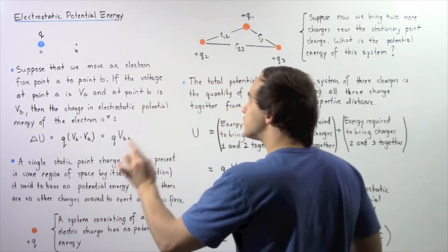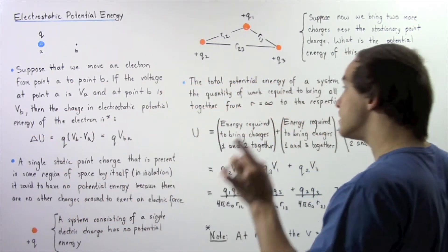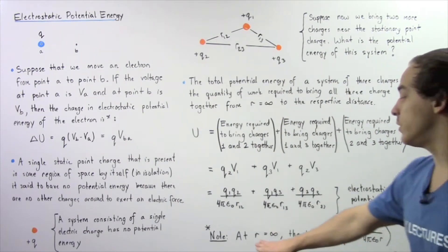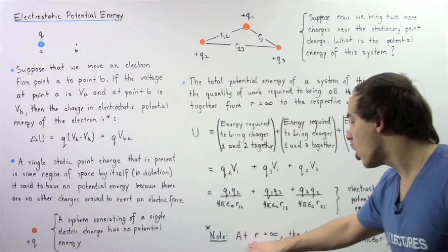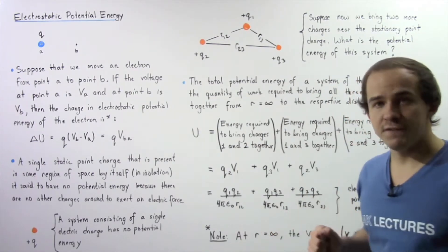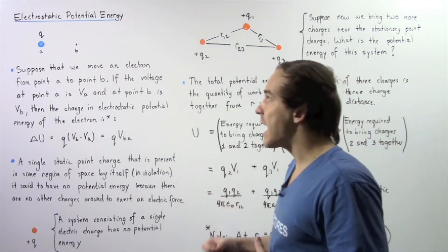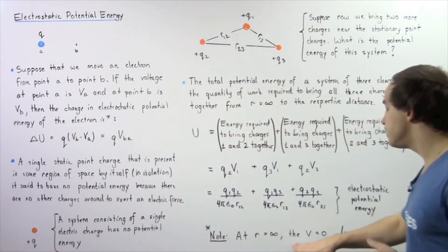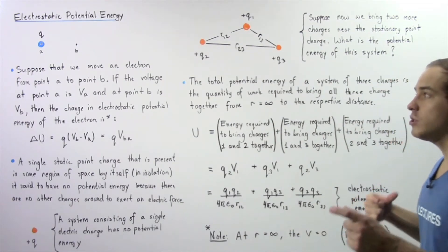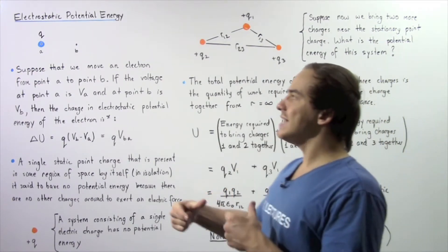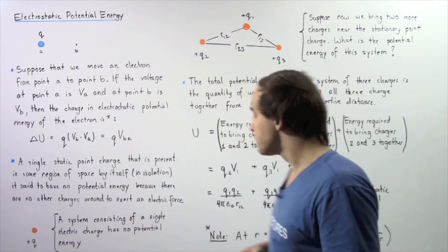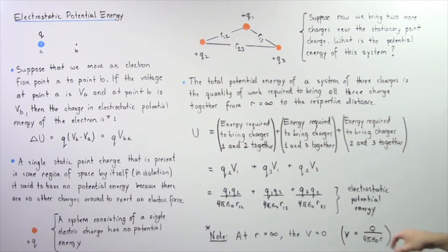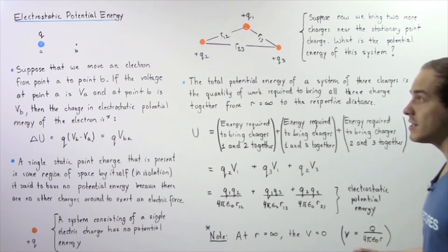When we define the electrostatic potential energy, it's important to note the following point. At R equals infinity — when the distance between our electric charges is infinitely far — the voltage between those two electric charges is defined to be zero. So the voltage is equal to Q divided by 4π epsilon-naught multiplied by R, where R is the distance between our two electric charges.